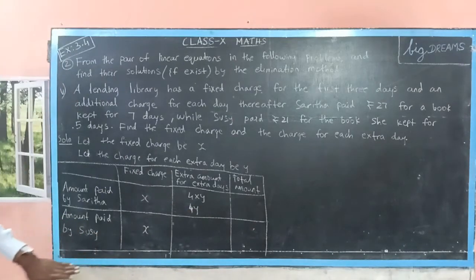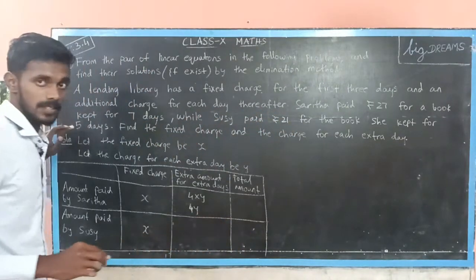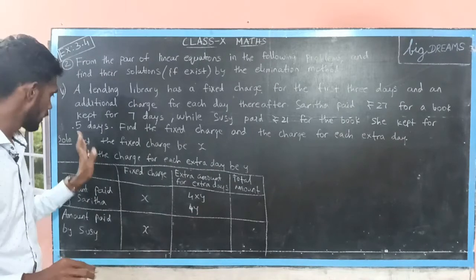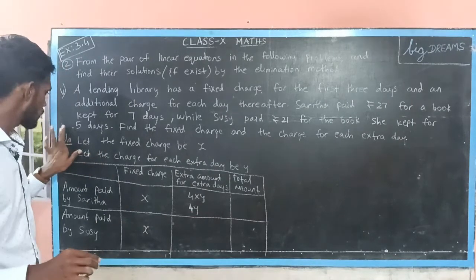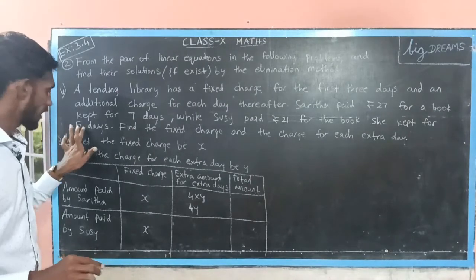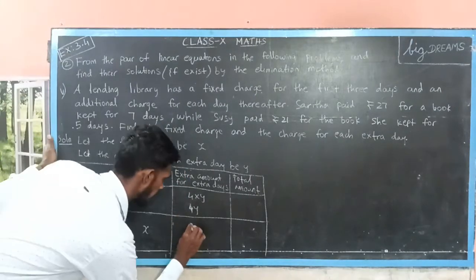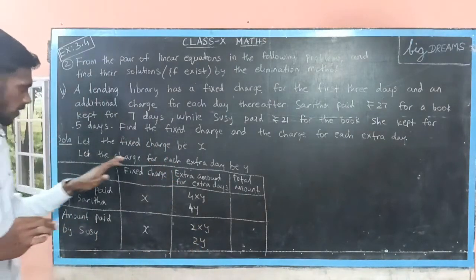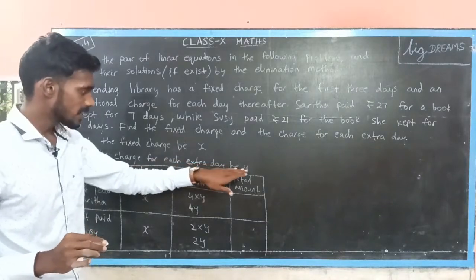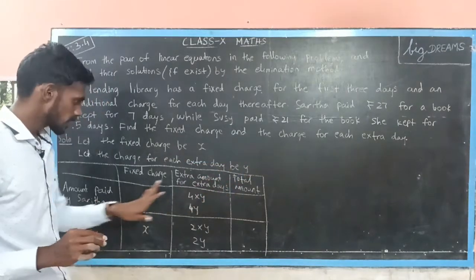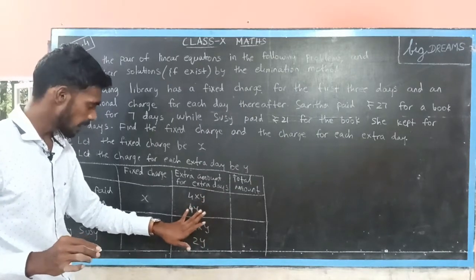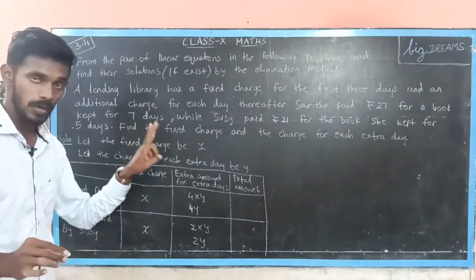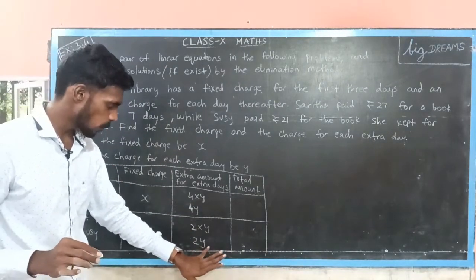In Susie's case, she is keeping a book for 5 days. She had already paid a fixed charge for the first three days. The remaining days are 2 — that is 5 minus 3 gives 2. So for the extra two days, she has to pay 2 into y rupees, that is 2y rupees. Because for each extra day they are charging y rupees. Saritha is having the book for extra 4 days, so she is paying 4y rupees. Susie is having the book for extra 2 days, so she is paying an extra amount of 2y rupees.